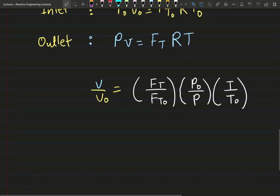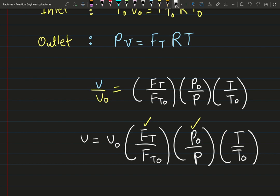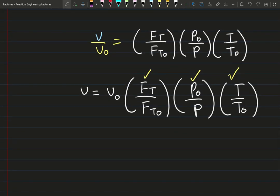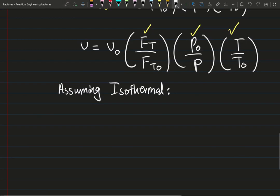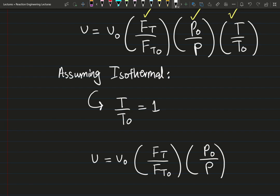The exit volumetric flow rate depends on the exit total molar flow rate, the exit pressure, and the exit temperature. If we simplify by assuming isothermal conditions, the term T/T₀ becomes one, giving us the exit volumetric flow rate as V̇ = V̇₀·(F_T/F_T0)·(P₀/P).